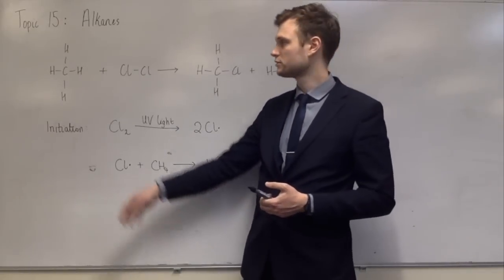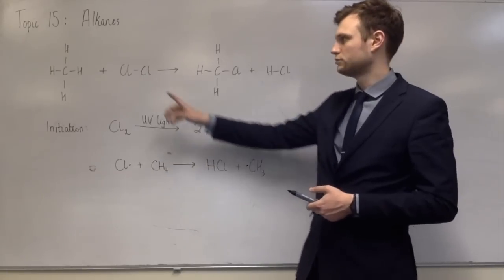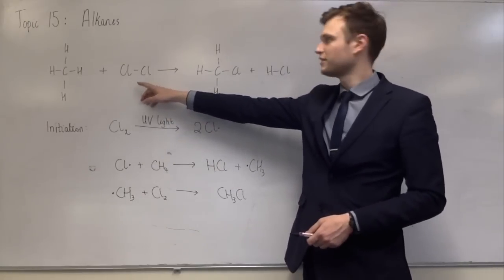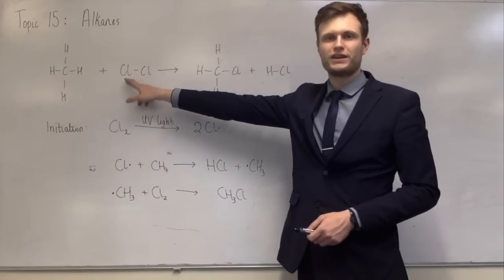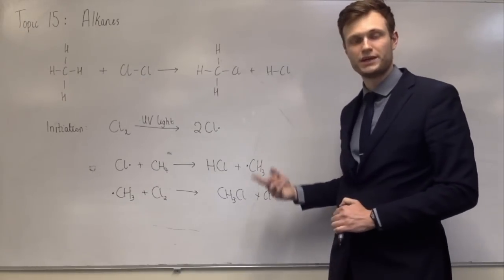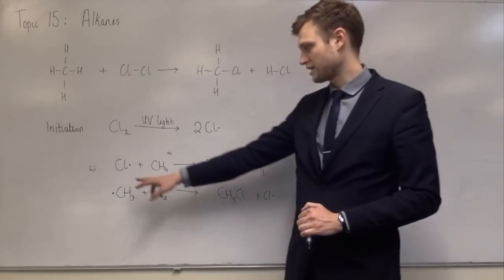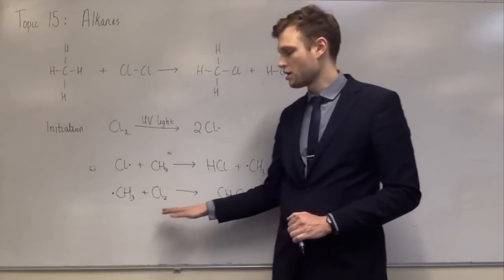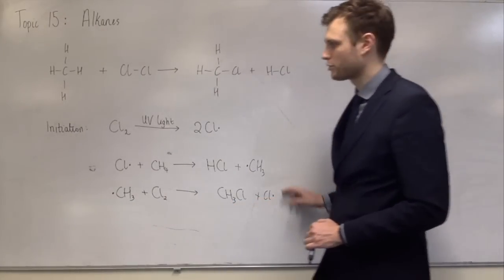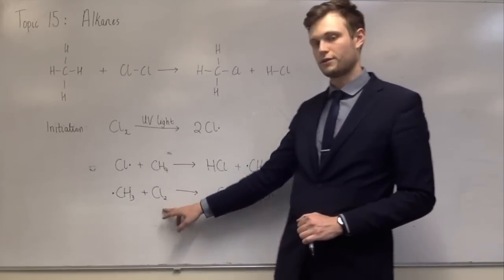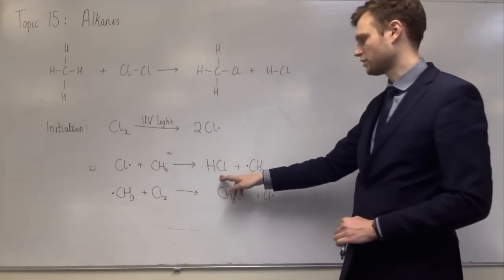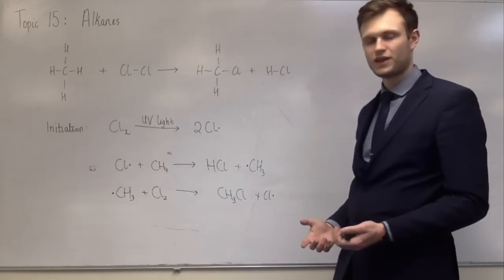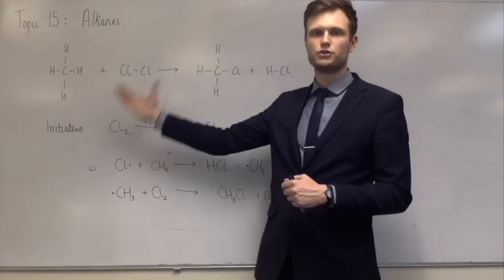This methyl radical then collides with a chlorine molecule. The methyl radical reacts with the chlorine to make chloromethane, and the chlorine-chlorine bond breaks, leaving a chlorine radical. This process can repeat over and over: the chlorine radical reacts with another methane to give hydrogen chloride and a methyl radical, and that methyl radical reacts with another chlorine to make chloromethane and a chlorine radical. These two steps are called propagation steps — they continue the reaction, making products and using up reactants.